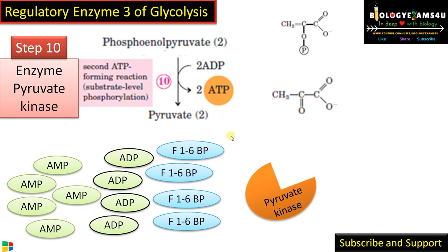Fructose 1,6-bisphosphate, formed in the third step (the rate limiting step), activates pyruvate kinase in the final step. This type of activation is called feed-forward activation. You can refer to our video for more on feed-forward activation. Fructose 1,6-bisphosphate, from the committed step, activates and promotes the formation of the final product pyruvate.